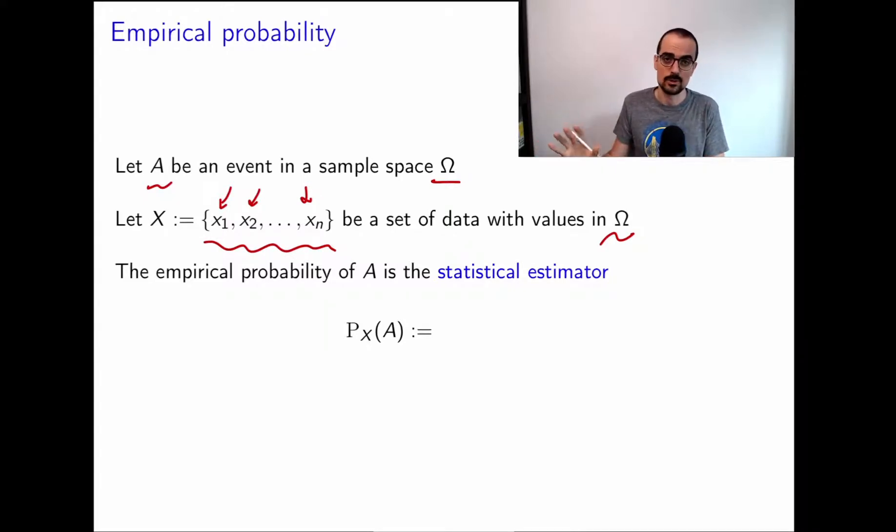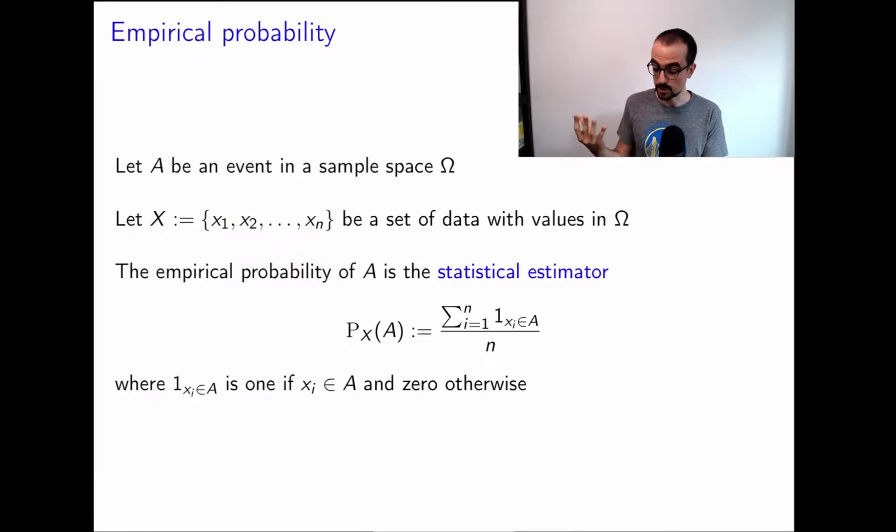And that, at the end of the day, is the empirical probability. And as you will see, we're going to use empirical probability all over the place to estimate probabilistic objects from data. So put a bit more formally, we have this set of data X, where this subscript indicates it's a probability measure but it's a function of X also.